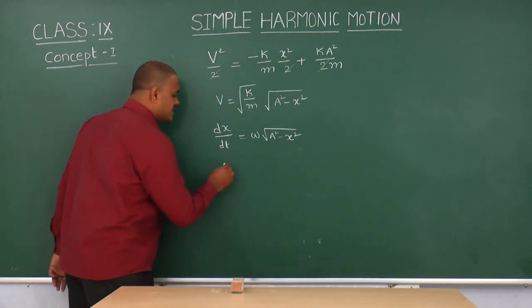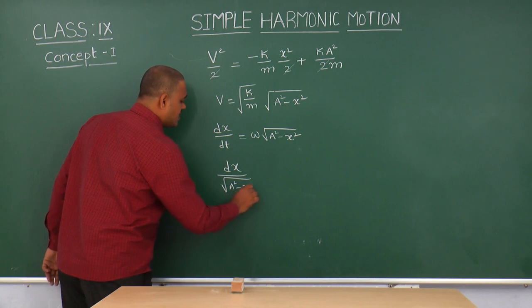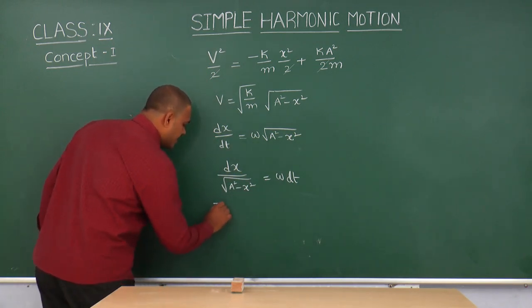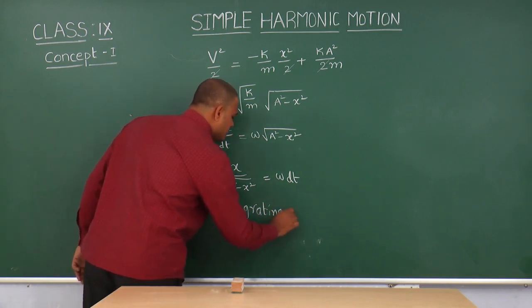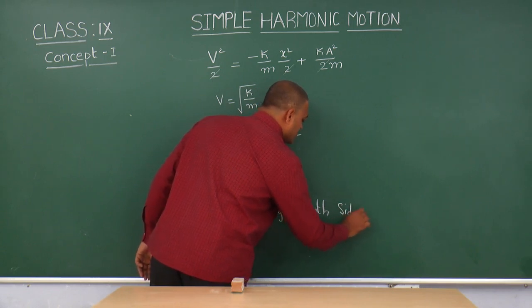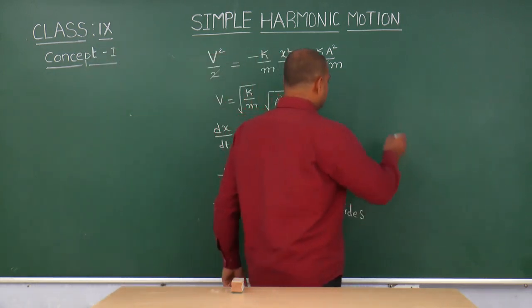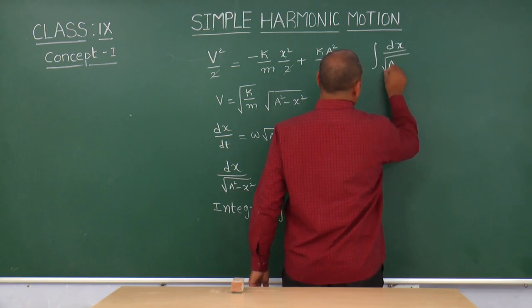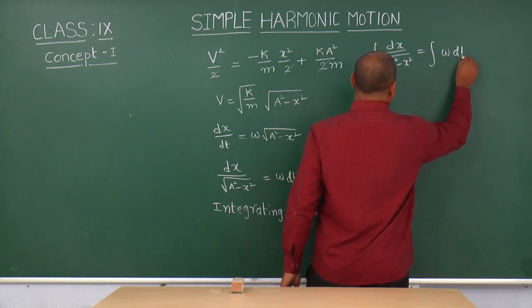So this can be written as dx divided by under root a square minus x square is equal to omega into dt. Again, integrating on both sides, we get integral dx by under root a square minus x square is equal to integral omega dt.